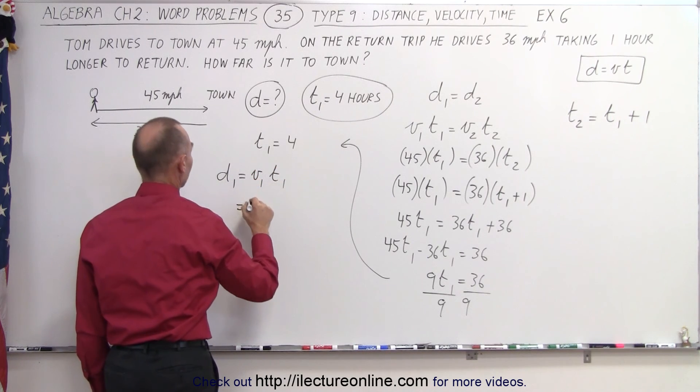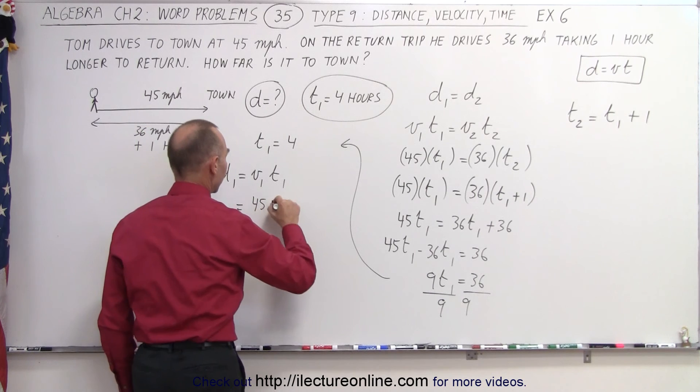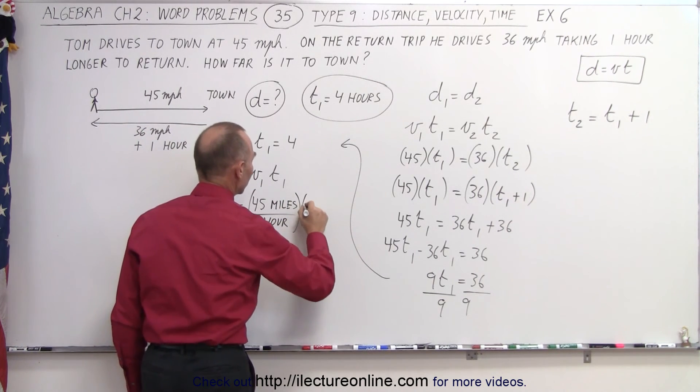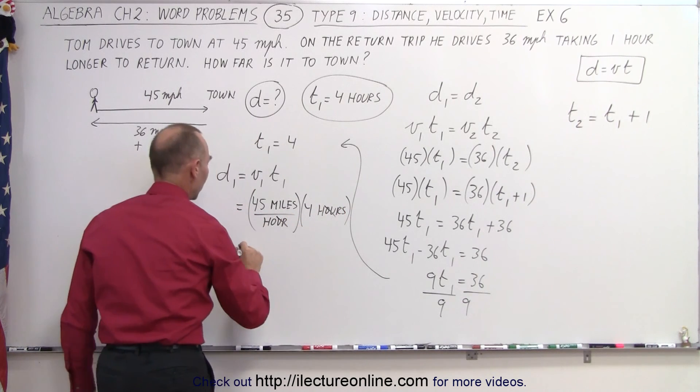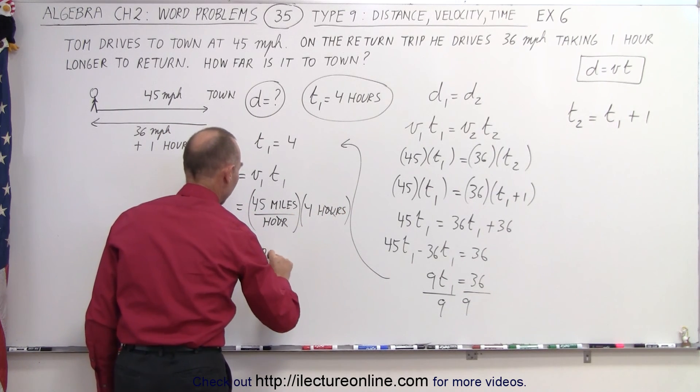And v₁ was 45 miles per hour. And we multiply times t₁, which is 4 hours. Notice the hours cancel out. And we end up with 180 miles.